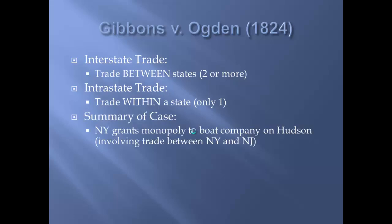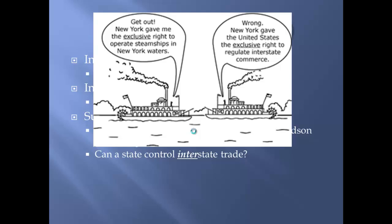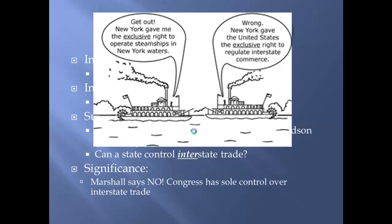New York state granted a monopoly to a boat company on the Hudson River, which involved trade between New York and New Jersey. The question before the Supreme Court was: can a state control interstate trade? There's a political cartoon where one side says, 'Get out — New York gave me the exclusive right to operate steamships in New York waters,' and the other says, 'Wrong — the Constitution gave the United States the exclusive right to regulate interstate commerce.' John Marshall ruled that an individual state cannot control interstate trade; Congress has sole control over it.